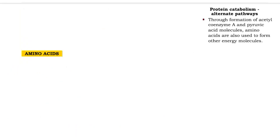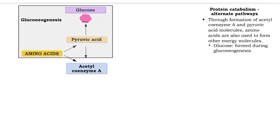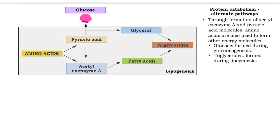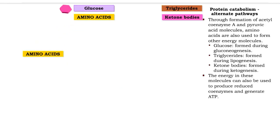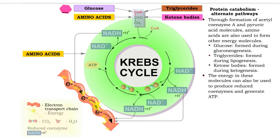Through formation of acetyl coenzyme A and pyruvic acid, amino acids are used to form other energy molecules. For instance, glucose is formed during gluconeogenesis, triglycerides are formed during lipogenesis, and ketone bodies are formed during ketogenesis. The energy in these molecules can also be used to produce reduced coenzymes and generate ATP.